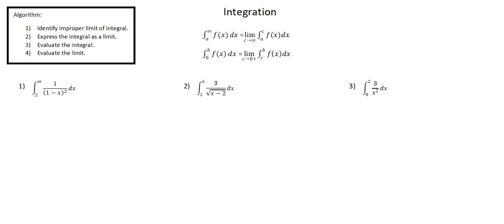We're dealing with an improper integral when some part of a definite integral becomes infinite. We'll be looking at two cases. In one case, an integral goes infinite horizontally, and that's obvious because one of the limits of integration is infinity. We could also see a scenario in which an integral is going towards negative infinity.